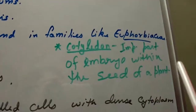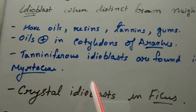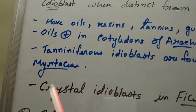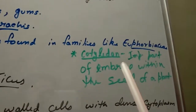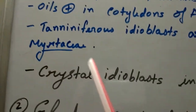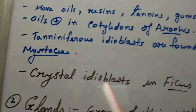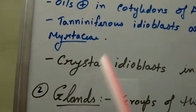Third point: tanniferous idioblasts are found in families like Euphorbiaceae and Myrtaceae. These are secretory or idioblastic cells that secrete tannin as their main secretion. They are found mainly in Euphorbiaceae — for example, Euphorbia — and Myrtaceae — for example, Guava, which belongs to the Myrtaceae family.